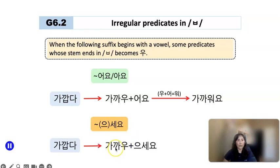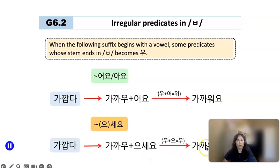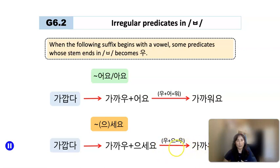So you have 가까, ㅂ is removed, and you have 우, which becomes 가까우세요. When you're talking to a senior person, or a senior person is the subject of the sentence, you use this expression: 가까우세요.